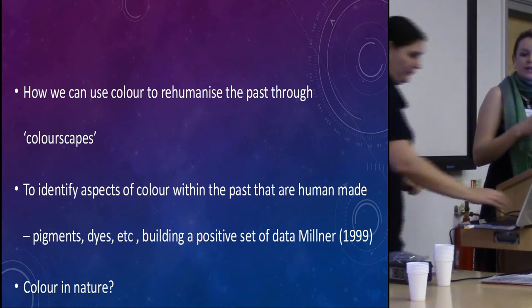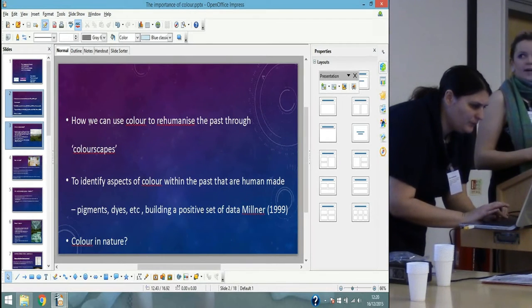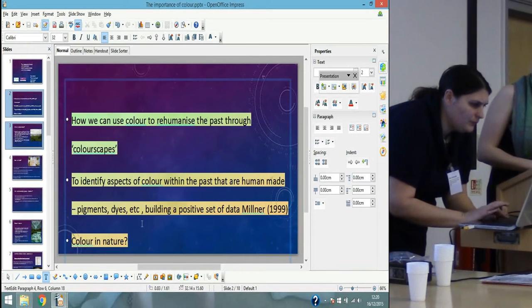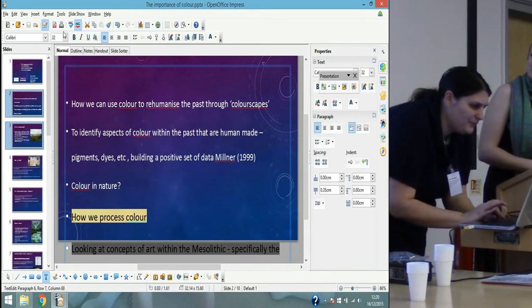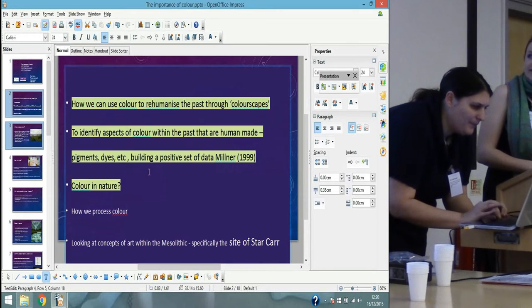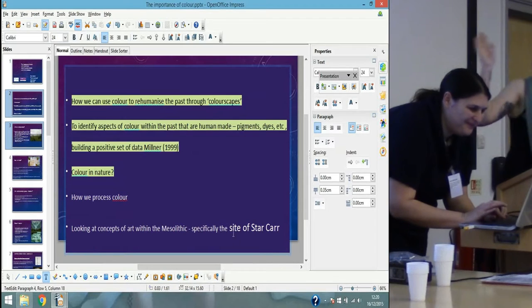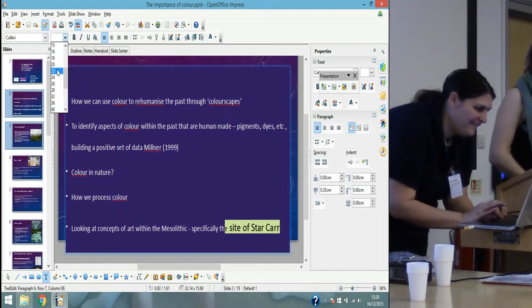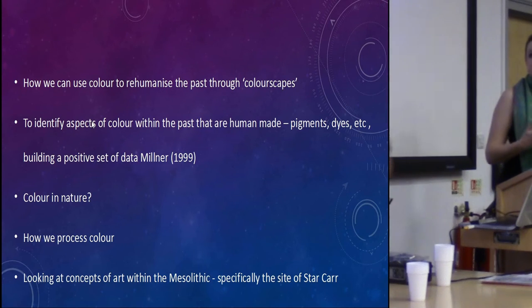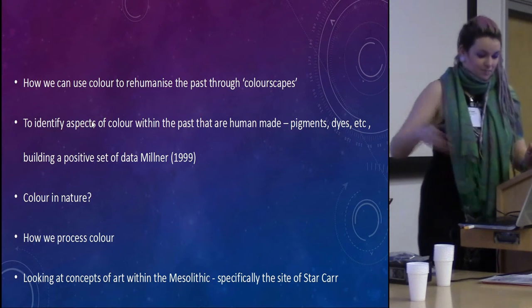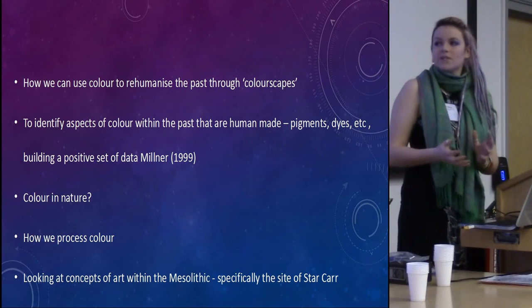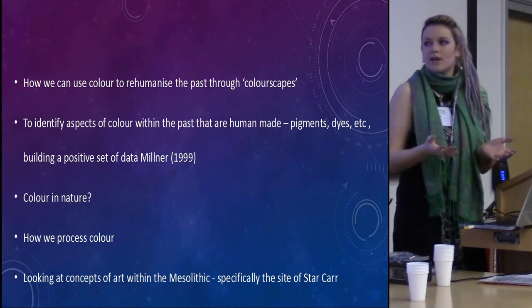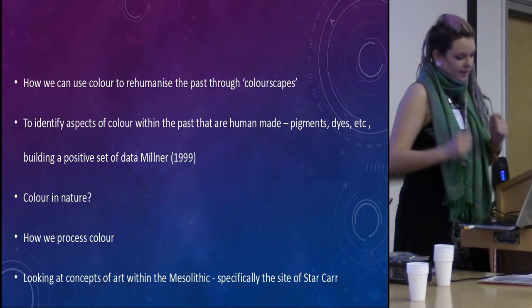We can look at things such as colour in nature, because colour is not completely secluded to humans. So colour as seen through the eyes of ourselves and non-humans — how we process colours — and then relating it back to looking at specific art concepts within Mesolithic Starkar. So how can we bring all these different aspects from Colorscapes into looking at art?